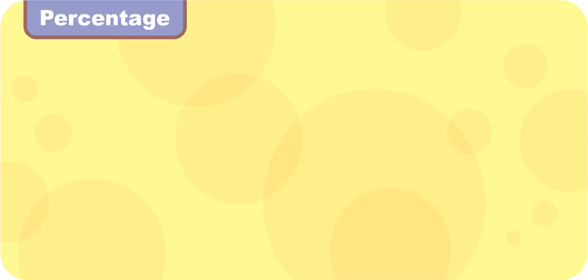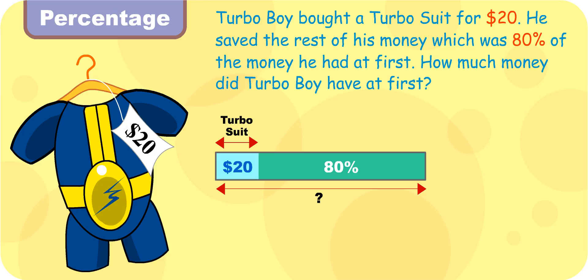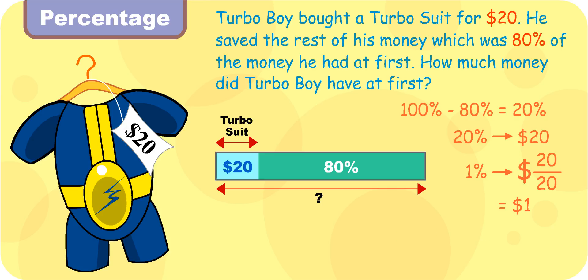Very good! Turbo Boy bought a turbo suit for $20. He saved the rest of his money, which was 80% of the money he had at first. Turbo Girl, can you help us find how much money Turbo Boy had at first? Okay. 100% minus 80% is 20%. 20% represents $20. Therefore, 1% represents $1. So 100% is $1 times 100, which gives us $100. Turbo Boy had $100 at first.